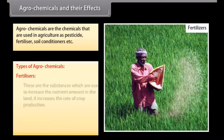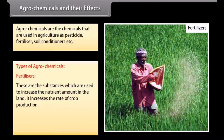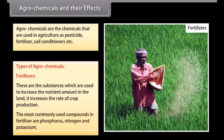Fertilisers are substances used to increase the nutrient amount in the land and increase the rate of crop production. The most commonly used compounds in fertilisers are phosphorus, nitrogen, and potassium.